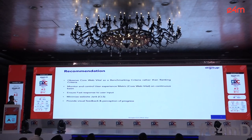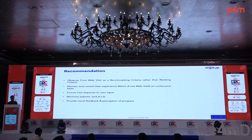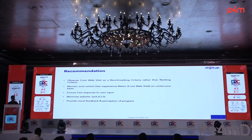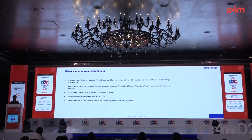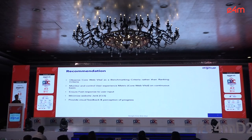So what's the recommendation? We should observe Core Web Vitals as a benchmarking criteria rather than just a ranking criteria. We should monitor and control user experience metrics on a continuous basis. We should ensure faster response — look at these numbers literally and see where the problem is, and further reduce them. If your INP for a click of a burger button on mobile is 200 milliseconds, try for at least 80 to 100 milliseconds. Minimize website jank — browse your webpage on a 3G network on mobile and see if the experience is smooth. If there is jank, investigate why and provide visual feedback and a perception of progress. With that, I conclude — hopefully this was helpful for everyone.